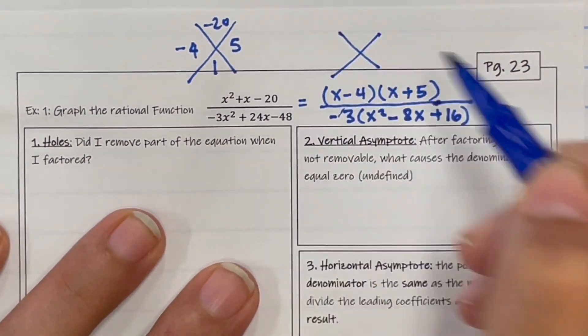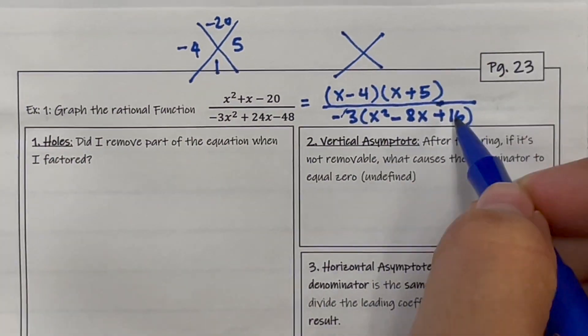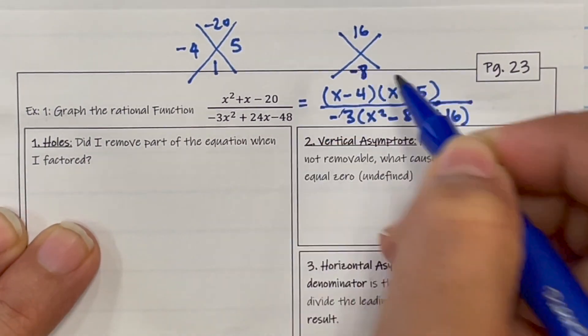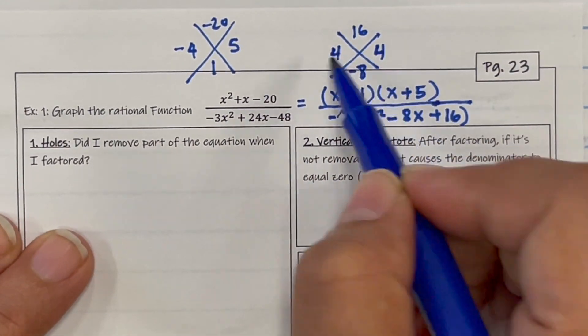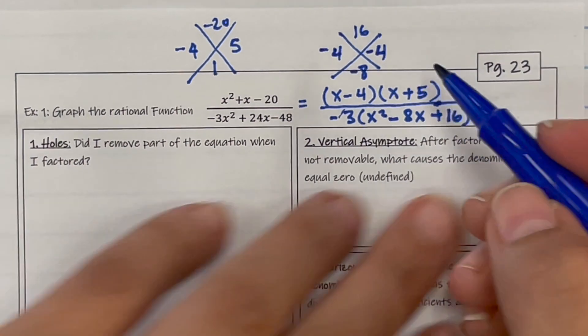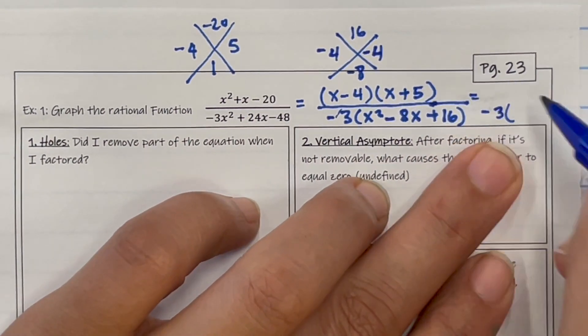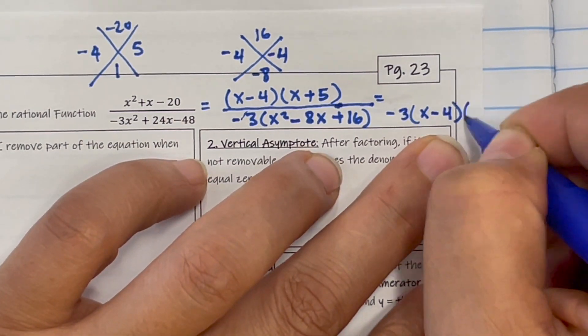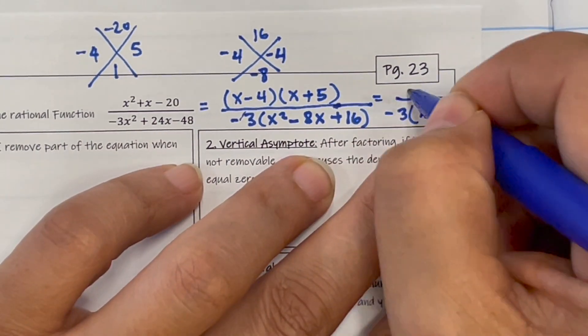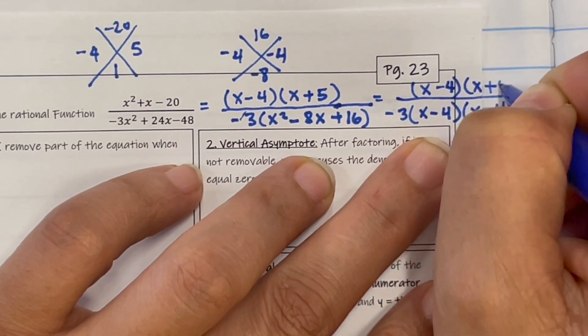Let's go ahead and factor that out. So two numbers that multiply to positive 16 and add to negative 8. That's going to be 4 and 4, and I need both of them to be negative. So writing that out, it's going to be x minus 4 and then x minus 4 again. And then on the top, I had x minus 4 and x plus 5.